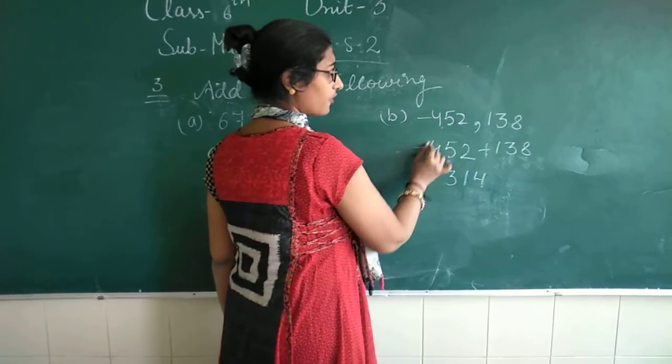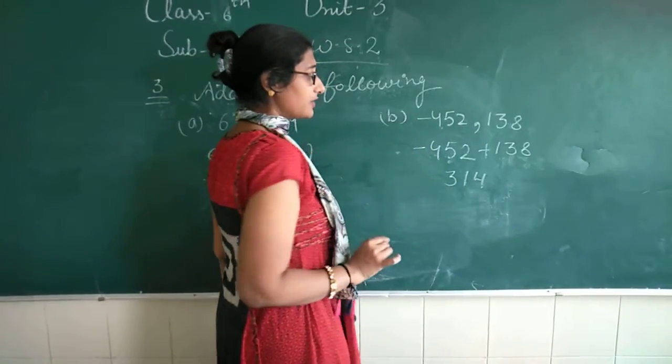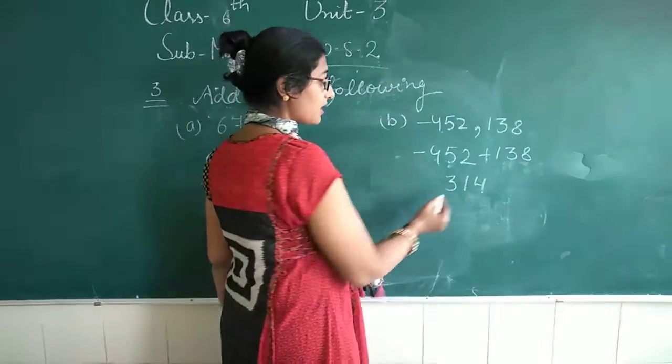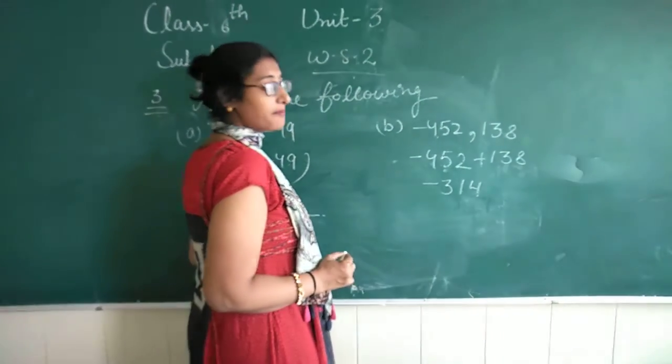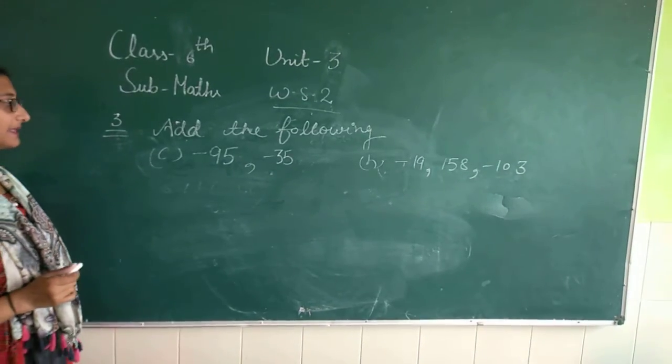Dono mein bada kaun? 452. Iske aage sign kaun ka? Minus ka. So, 314 ke aage bhi kis ka sign aayega? Minus.